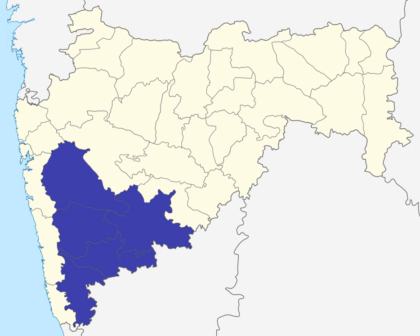The Satara district is under proposal to be divided, with a separate Karad district to be carved out of the existing Satara district, with the inclusion of Karad and Patan, as well as the Talukas of Walwa, Kadegaon, and Shirala from the neighbouring Sangli district in the proposed Karad district.